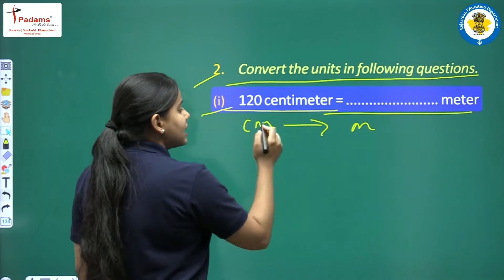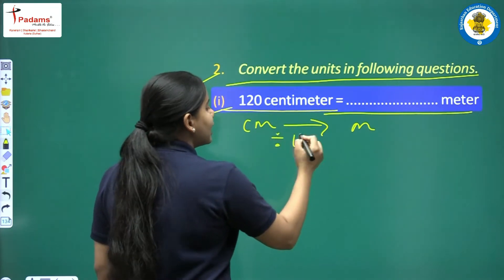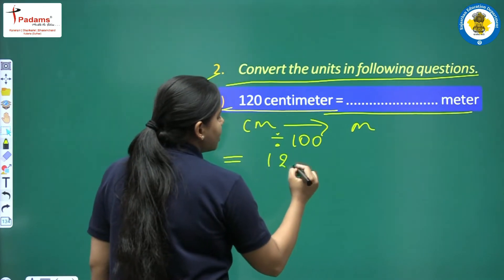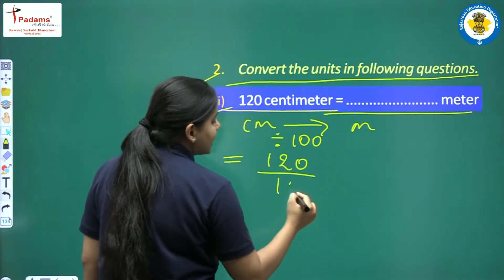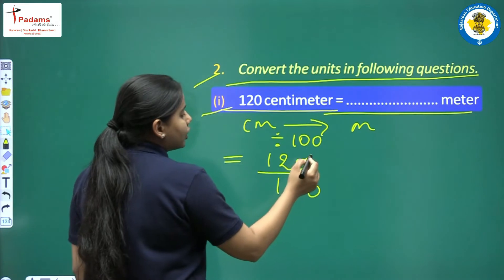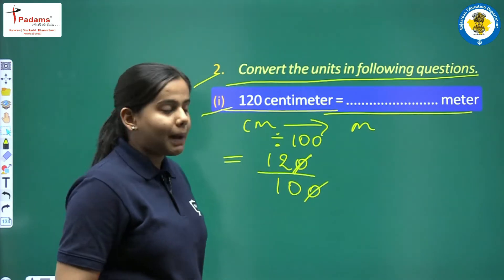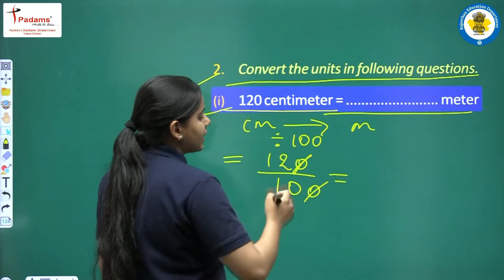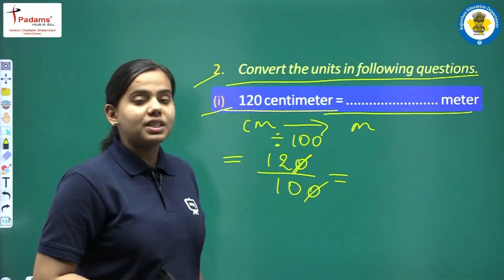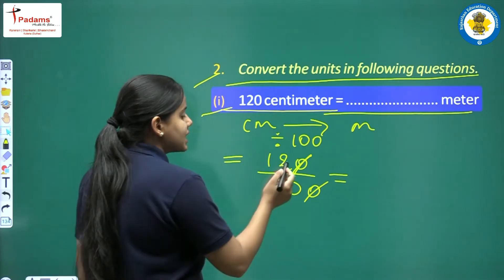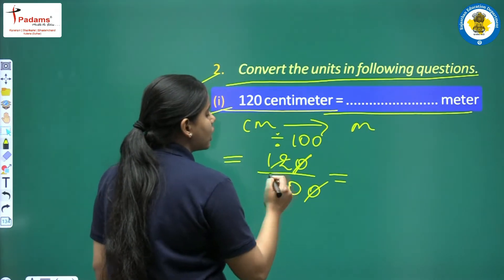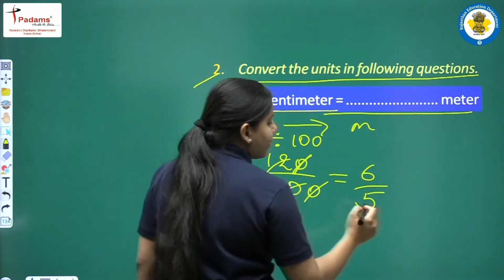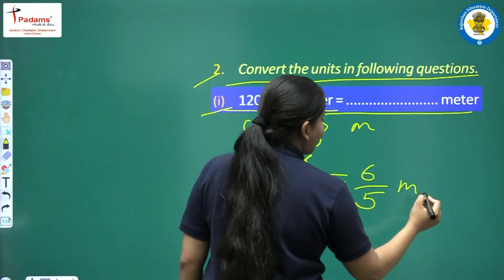Because 1 meter equals 100 centimeters, here we divide by 100. So we are given 120; we have to divide it by 100. Zero cancels zero, and what remains is 12 upon 10. We can simplify this — divide both by 2: 12 divided by 2 is 6, and 10 divided by 2 is 5. So we can write 6 upon 5 meters, because it cannot be further divided.